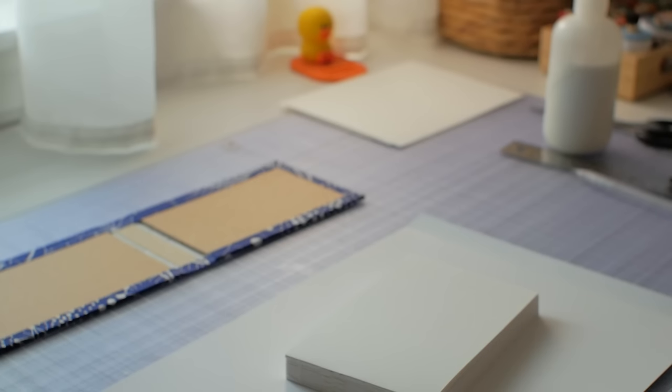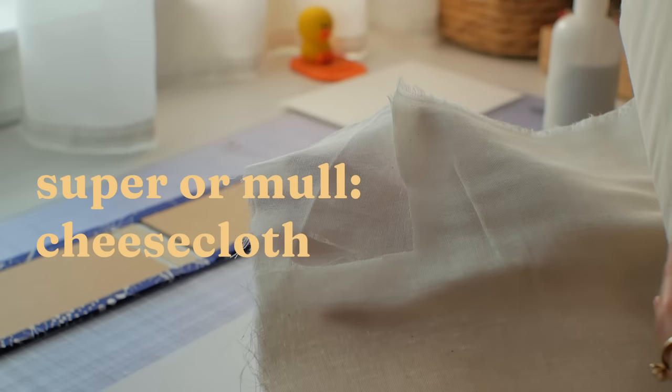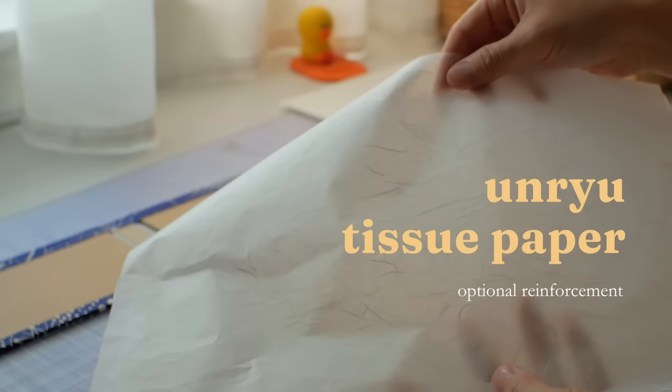Back to the text block, I'm going to reinforce the spine using a super cloth, in this case, it's cheesecloth, and unryu tissue paper.